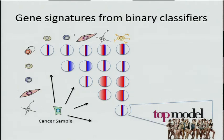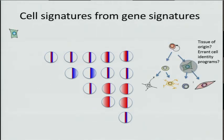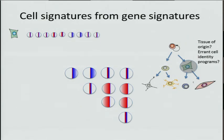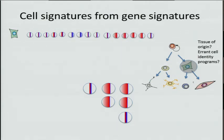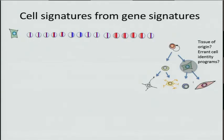When a new sample — say a cancer sample — comes in, we run it on each of these classifiers individually and find its log likelihood of being in either one of the two categories. From this, we define a signature for each cell based on its performance in these classifiers. That signature can give us information about where it falls in the hierarchy of development, the tissue of origin, what errant cell programs are being activated, and correlations to other interesting clinical variables.